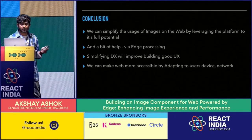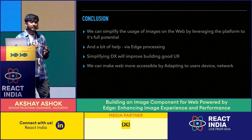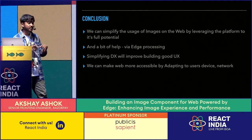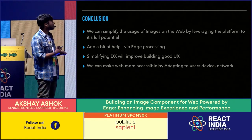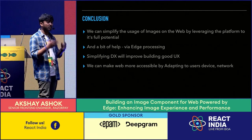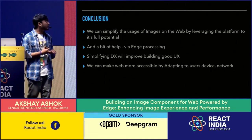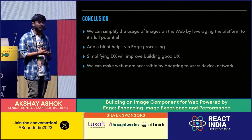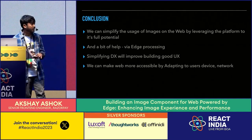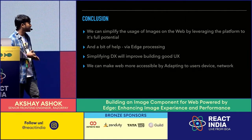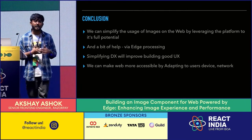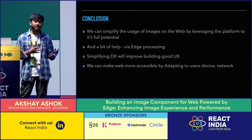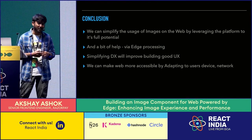Key takeaways: simplify image usage on the web by leveraging platform capabilities like HTTP headers to their full potential. Use edge processing to customize image delivery for end users. The main focus is simplifying things for developers — they shouldn't need to worry about different formats, just build things. Adapting images to end users makes content more accessible, even for people on low-powered devices or poor internet connections.